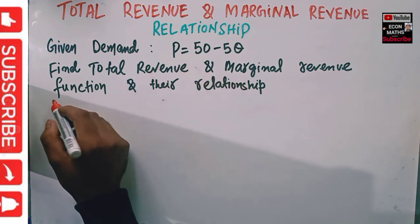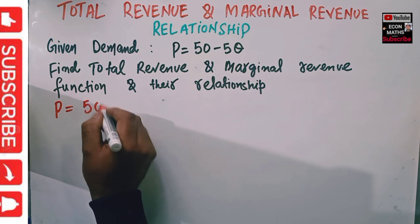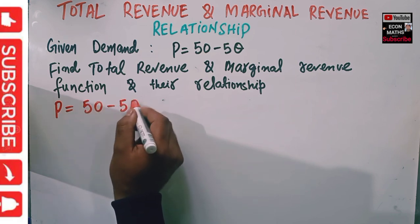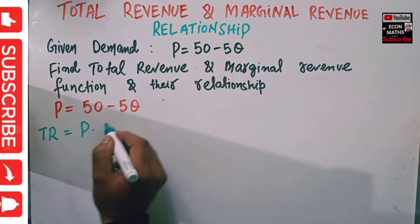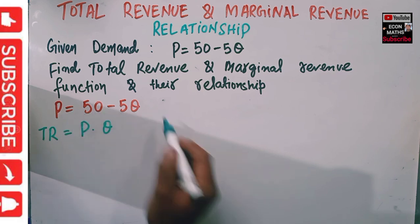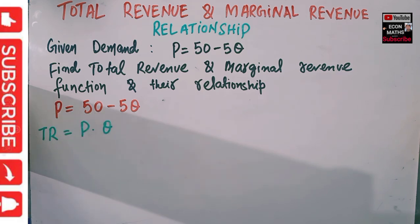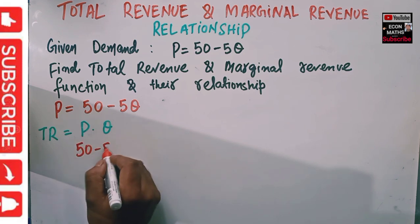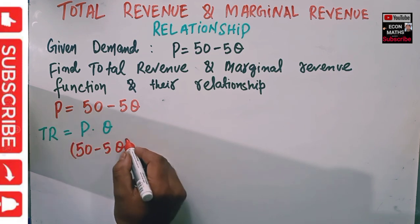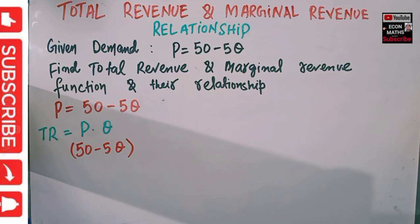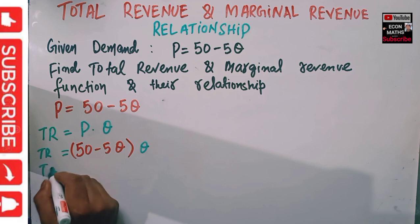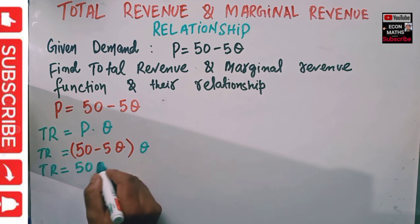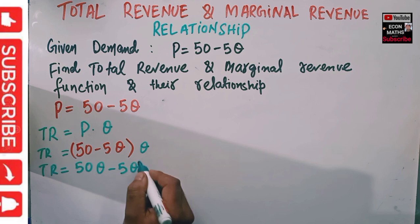We are given the demand function P = 50 - 5Q. Total revenue is simply equal to price multiplied by output. So in place of P, we substitute the demand function: (50 - 5Q) × Q. This gives us the total revenue function: TR = 50Q - 5Q².